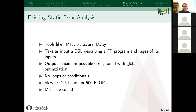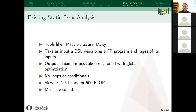There are existing tools for static floating point error analysis — FP Taylor, Satire, and Daisy. I'll focus on FP Taylor. These tools all work similarly: they take as input a domain-specific language where you express some floating point program, you give the range of inputs, and they output the maximum possible error — found via global optimization in FP Taylor's case. This is great because we know the worst error can ever be given the ranges and the floating point program.